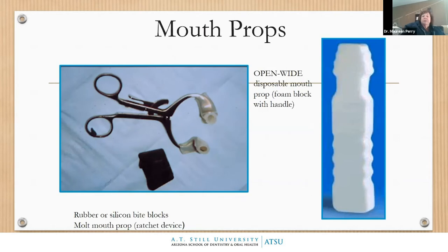The mouth props we use include the Open Wide foam block with a handle, which can be rinsed, air-dried, and given to the patient or caregiver for home hygiene. We have the ratchet-style mouth prop — I would not use that unless trained, because you can catch the patient's skin. We also use silicone bite blocks with floss attached so nothing goes down the throat. You certainly must have some sort of mouth prop if you're going to have any instruments in a CP patient's mouth.